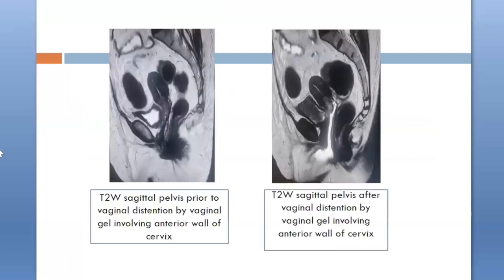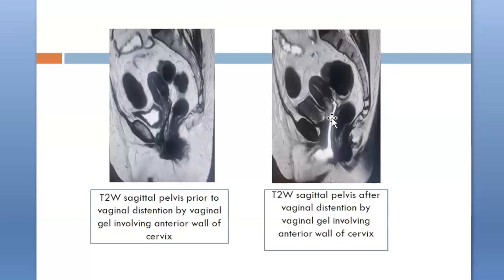This is a T2-weighted sagittal image of MRI pelvis. Here we can see a T2 hyperintense lesion involving the anterior wall of cervix. The second image is obtained after distension of the vagina by vaginal gel. Here we can appreciate the lesion better, which appeared hyperintense on T2-weighted image in the anterior wall of cervix.